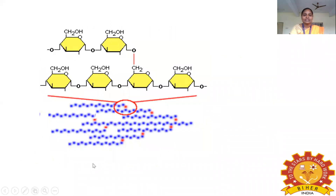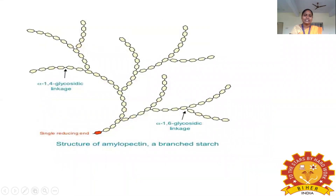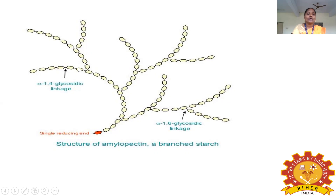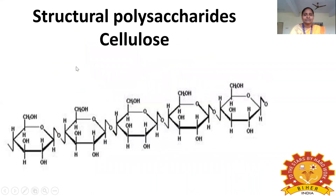In the starch structure diagram, the red color indicates the branch chain (amylopectin) and the blue color indicates the linear chain (amylose). The alpha-1-6 glycosidic linkages occur at the branch points, while alpha-1-4 glycosidic linkages occur in the linear portions.